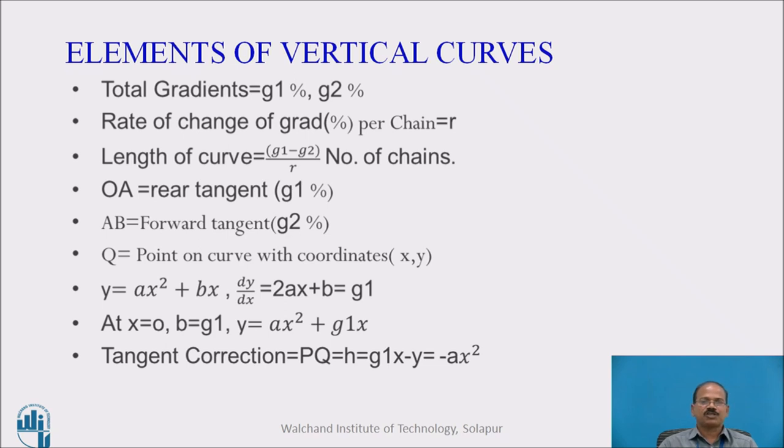Normally, rate of change of gradient per chain is given to us from transportation criteria. There are several factors to be taken into consideration. One has to think of the visibility of other vehicles coming from the other side, as well as the overtaking safe distance for the vehicle which is bypassing your vehicle. By giving consideration to all these things, rate of change of gradient is designed by the transportation criteria and is normally known to us.